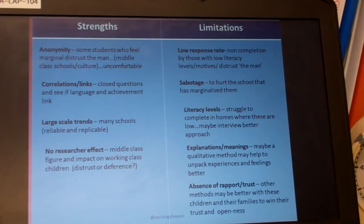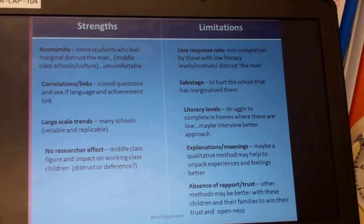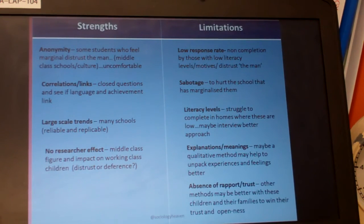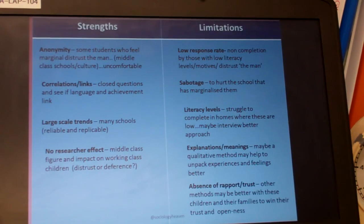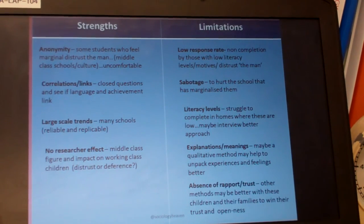Finally, the absence of rapport and trust is significant, and these are quite important for these sorts of students to open up. Other methods may be better than a questionnaire, which can feel formal and associated with authority. Methods like unstructured interviews may be much more effective for communicating with these children and their families, winning their trust and gaining more openness. Those connections between methods and context are so important to reach the top level of the mark scheme.